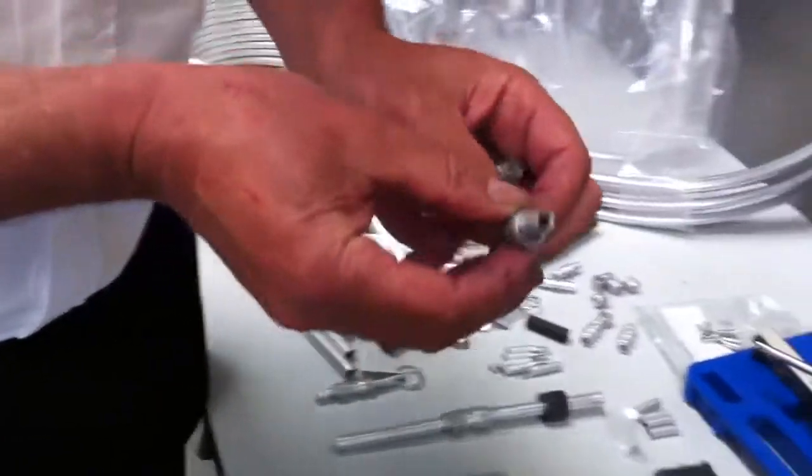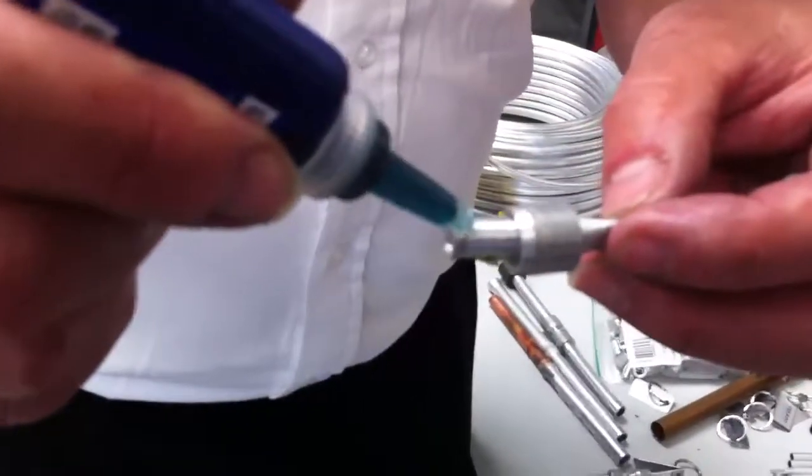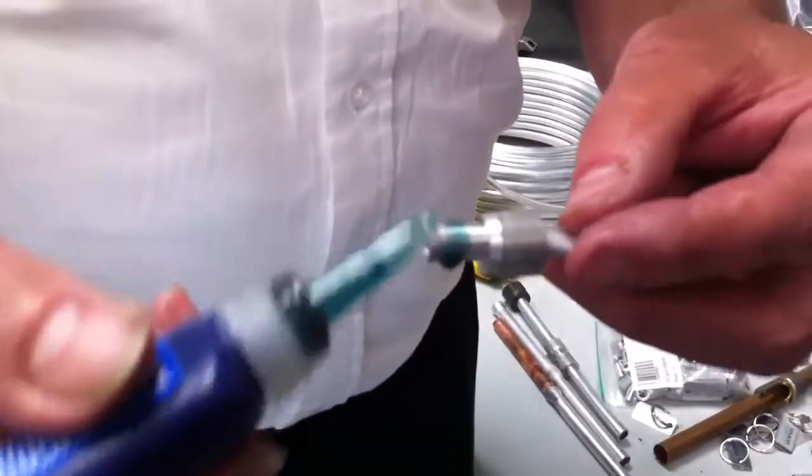So now, all we have to do is put our Lockprep fluid on. This is an anaerobic filler which fills the imperfections in the two mating metal surfaces.